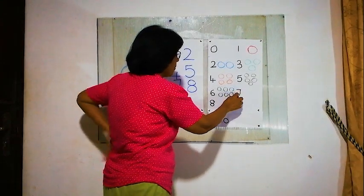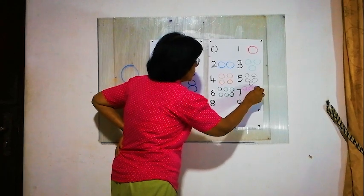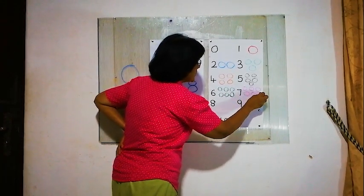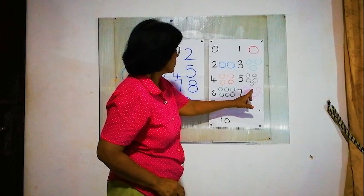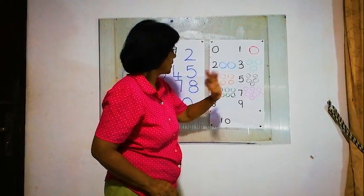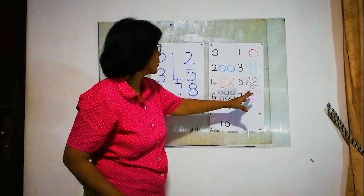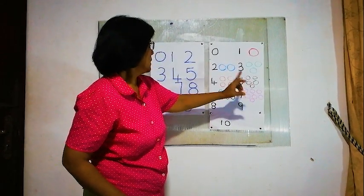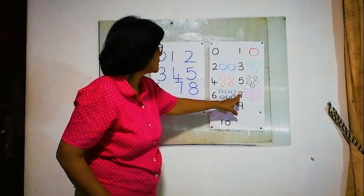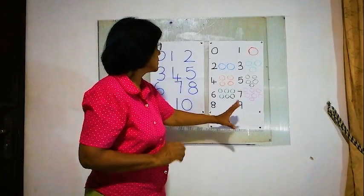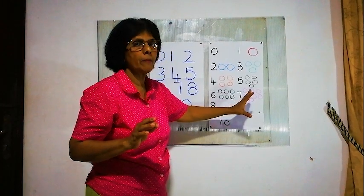Now, we'll go to number 7. We have to draw 7 balls here: 1, 2, 3, 4, 5, 6, 7. Always, we must count and see whether the balls we are drawing are correct. If the number is 7, we have to draw 7 balls — or whatever picture, it should match the number.